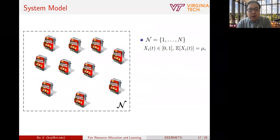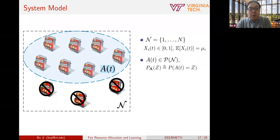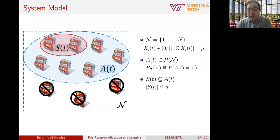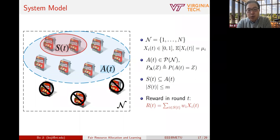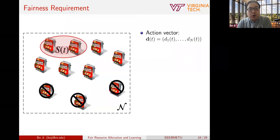Here is the system model. Similar to the traditional MAB model, we have N arms. X_i(t) is the random reward normalized between zero and one, and the mean reward is mu_i. At the beginning of each round, a set of available arms is revealed to us — this happens with a certain probability. Among the available arms, we choose a subset S(t), which we call a superarm. We require that the cardinality is less than or equal to M due to resource constraints — for example, in the wireless scheduling problem, M is the number of orthogonal channels. Once a superarm is selected, we receive a reward which is a weighted sum of the rewards of each arm in the subset, using weights W_i.